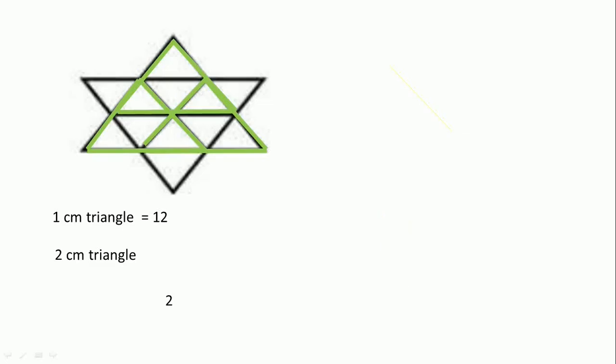Now we see the downward direction. This first triangle is 1, and this one is 2, and this one is 3 triangles in a downward direction. So upward is 3 and downward is 3. Total is 6.